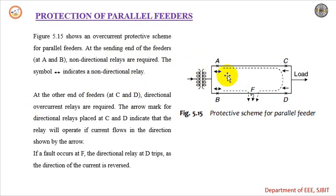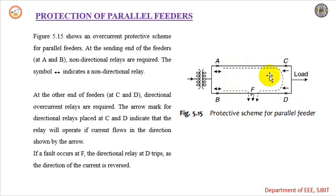At the other end of the feeders, that is C and D locations, directional relays are required. The single arrow indicates it is a directional relay, and the directional relay will operate only when the current is flowing in the arrow direction. So for one feeder, we have one non-directional relay and one directional relay.